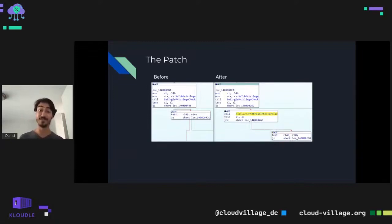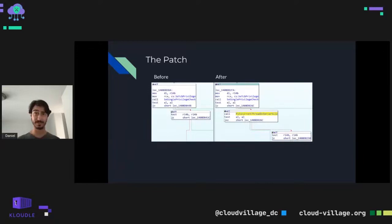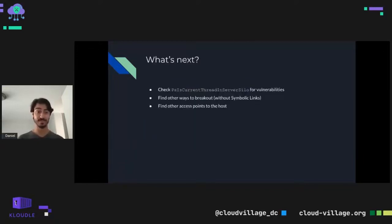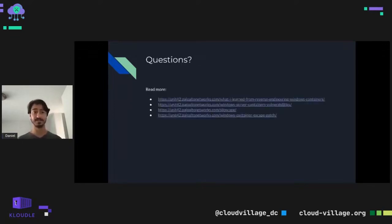Any call to NtSetInformationSymbolicLink from a thread inside a container will now be blocked with STATUS_PRIVILEGE_NOT_HELD. This is done using the PsIsCurrentThreadInServerSilo function, which checks whether the current thread is associated with a process inside a server silo. On the right you can see the patched function — there's simply a call and a branch that checks if the call comes from a server silo. As for what's next: I'll probably start by checking whether PsIsCurrentThreadInServerSilo is broken and if I can still break out, look for other ways to abuse symbolic links to escape containers, and search for other access points to the host not specifically related to symbolic links.